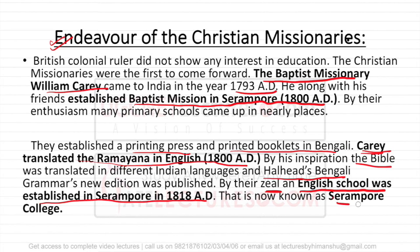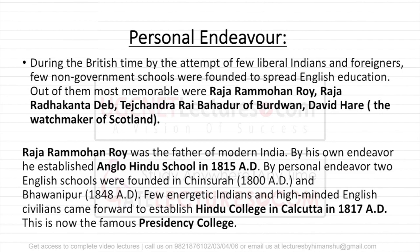After the efforts of the Christian missionaries, we talk about personal endeavours. There were many British and Indian individuals who showed personal interest in improving education. Among them were Raja Ram Mohan Roy, Raja Radha Kant Dev, and David Hare, the watchmaker from Scotland, who was interested in imparting education. The most important name is Raja Ram Mohan Roy, who was basically the father of modern India and the modern education system — a social worker.